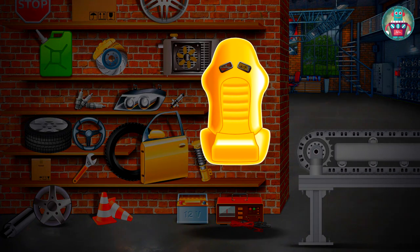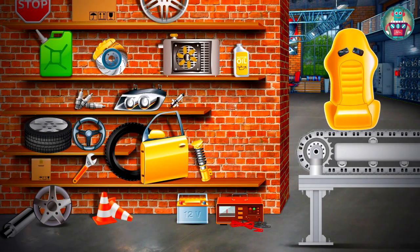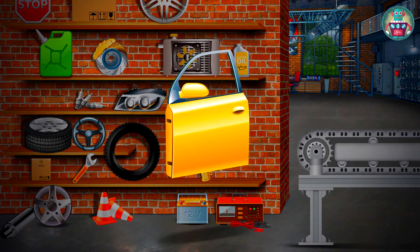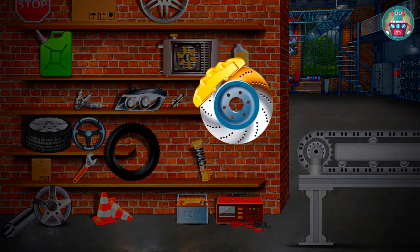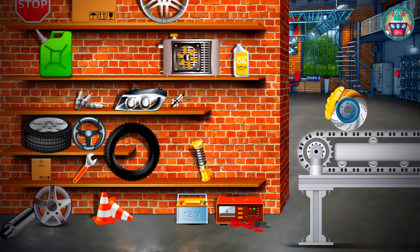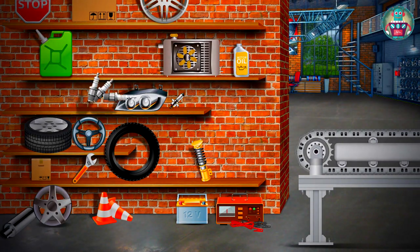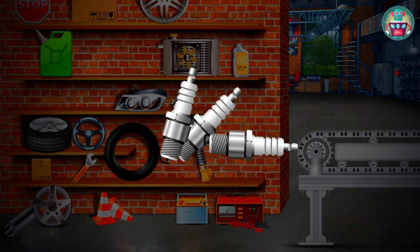A front seat for the driver. There! A front side door. That's it! A brake disc. Good! A spark plug for the engine. Three pieces.